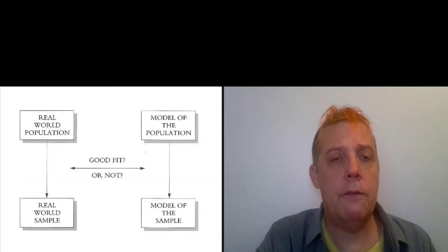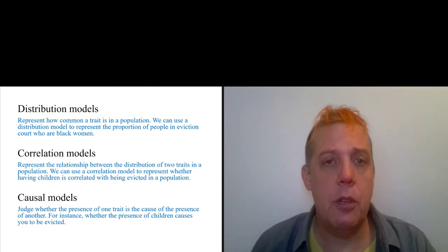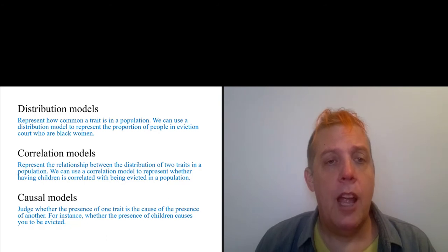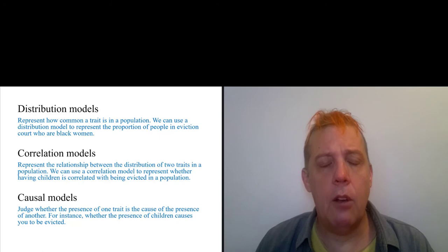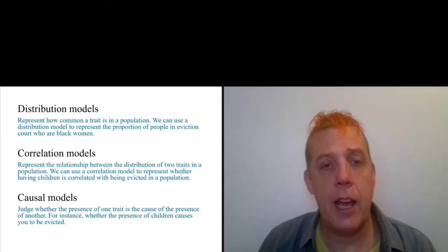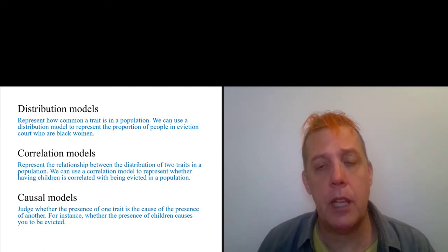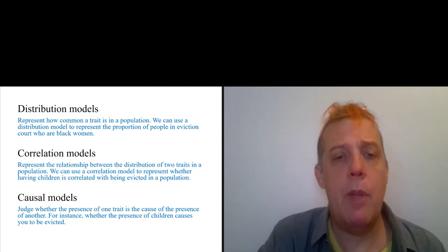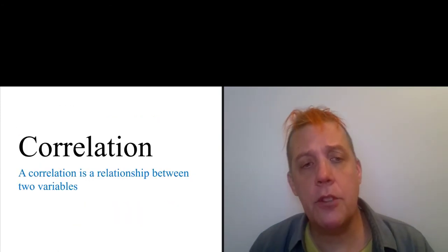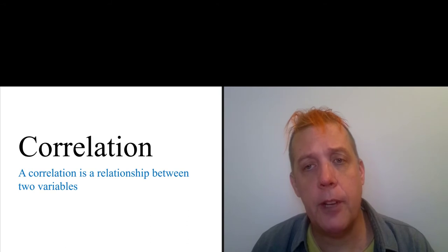So just to review, a distribution model represents how common a trait is in a population, and a correlation model represents the relationship between two distributions. One example in the book is that having children is correlated with being evicted. So at bottom, a correlation is a relationship between two variables.